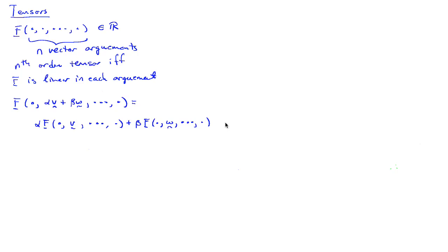I'd like to review a few points about tensors. We defined a tensor last time in a couple of different ways, but I'd like to look at this one definition here, where if I consider a tensor f of n vector arguments, then I get a real number. We're going to call this an n-th order tensor if and only if f is linear in each argument.